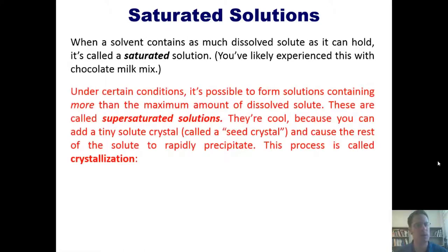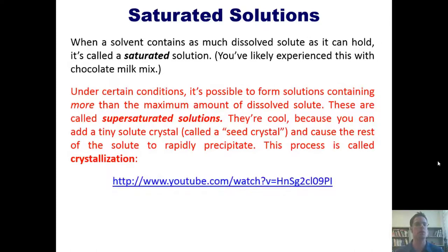Under certain conditions, it's possible to form solutions containing more than the maximum amount of dissolved solute. These are called supersaturated solutions. They're cool because you can add a tiny solute crystal, called a seed crystal, and cause the rest of the solute to rapidly precipitate. This process is called crystallization and brings us to a cool YouTube video that I'm going to show you right now.